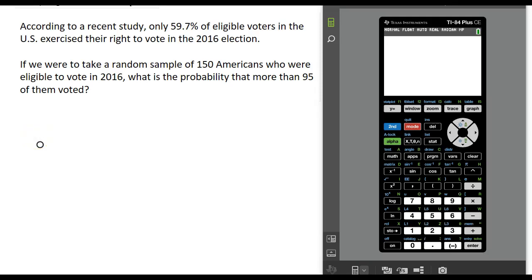In this video, we're going to look at computing probabilities using the sampling distribution of a sample proportion. According to a recent study, only 59.7% of eligible voters in the United States exercised the right to vote in 2016. If we were to take a random sample of 150 Americans who were eligible to vote back then, what is the probability that more than 95 of them voted?